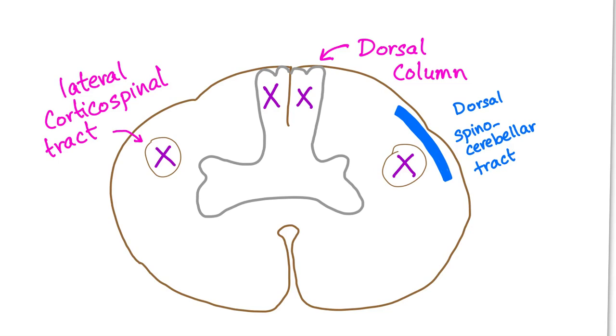Second, lateral corticospinal tract will be affected, leading to weakness. There are two different types. Spasticity or rigidity. Here we will have spasticity.